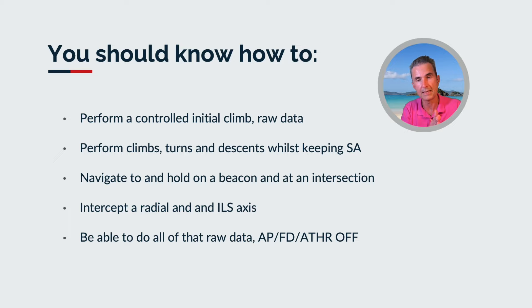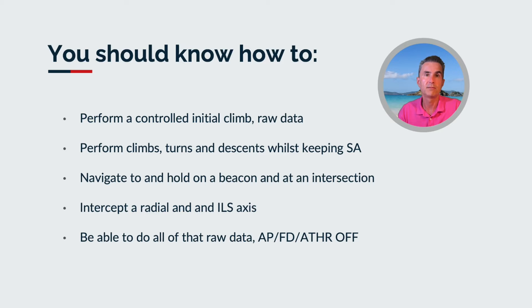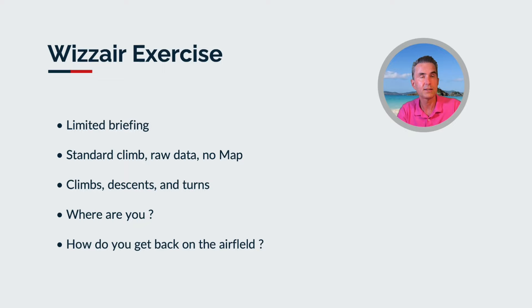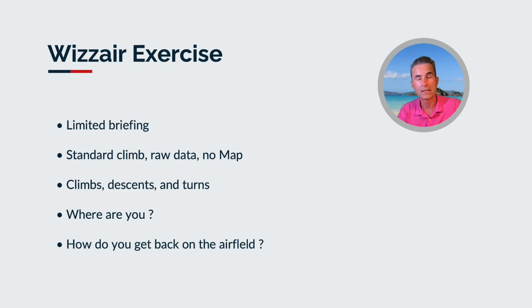You should be able to navigate and hold on a beacon or at an intersection — as a student pilot you should do this quite easily. You should be able to intercept a radial and an ILS axis in an elegant manner. There's the less elegant way — a 30-degree intercept — and the more elegant way — a tangential intercept, which we teach in the SPC. The 30-degree will work but requires more space. You should be able to do all of this with autopilot, flight director, and autothrottle off. For the Wizz Air exercise, you'll have a limited briefing, standard climb raw data, no map. Then climbs, descents, and turns, and then they'll ask where you are. After that, they'll tell you: 'There's no more radar control — how do you get back to the field?'